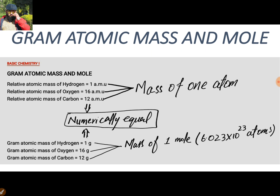Remember that previously we have studied that the relative atomic mass of hydrogen is 1 AMU, the relative atomic mass of oxygen is 16 AMU (or 15.98 AMU), and that of carbon is 12 AMU. These are the masses of one atom of each element — that is, 1 AMU for hydrogen means 1 atom of hydrogen, 16 AMU for oxygen means 1 atom of oxygen, and similarly 12 AMU means 1 atom of carbon.